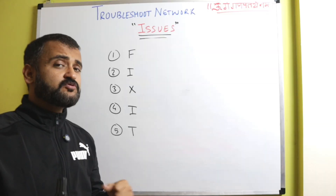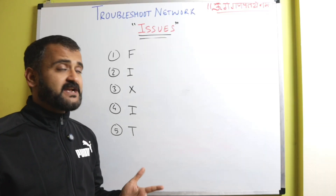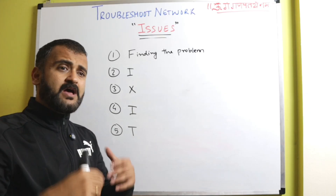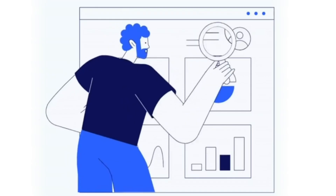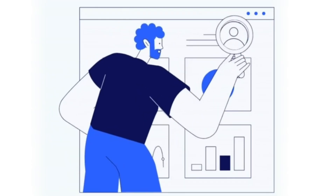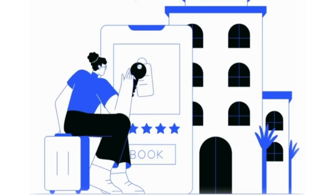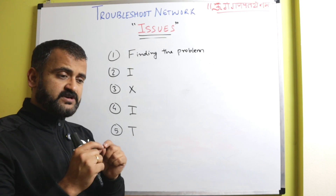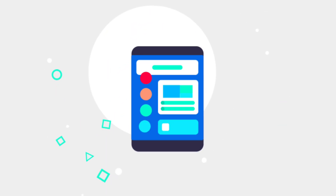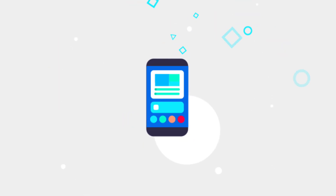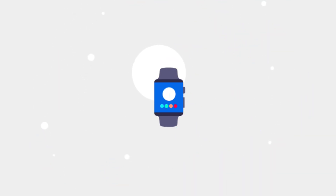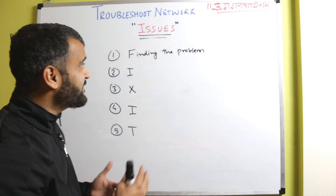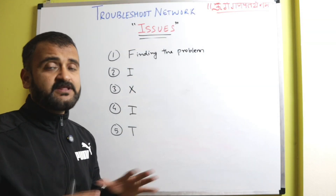This is our five-step fix it framework. Step number one for troubleshooting any issue, and especially a network issue, starts with finding the problem. When we say finding the problem, we have to collect whatever data we can, whatever information we can, for that particular issue. For example, if a user says they are not able to log in, we have to exactly find why they are not able to log in.